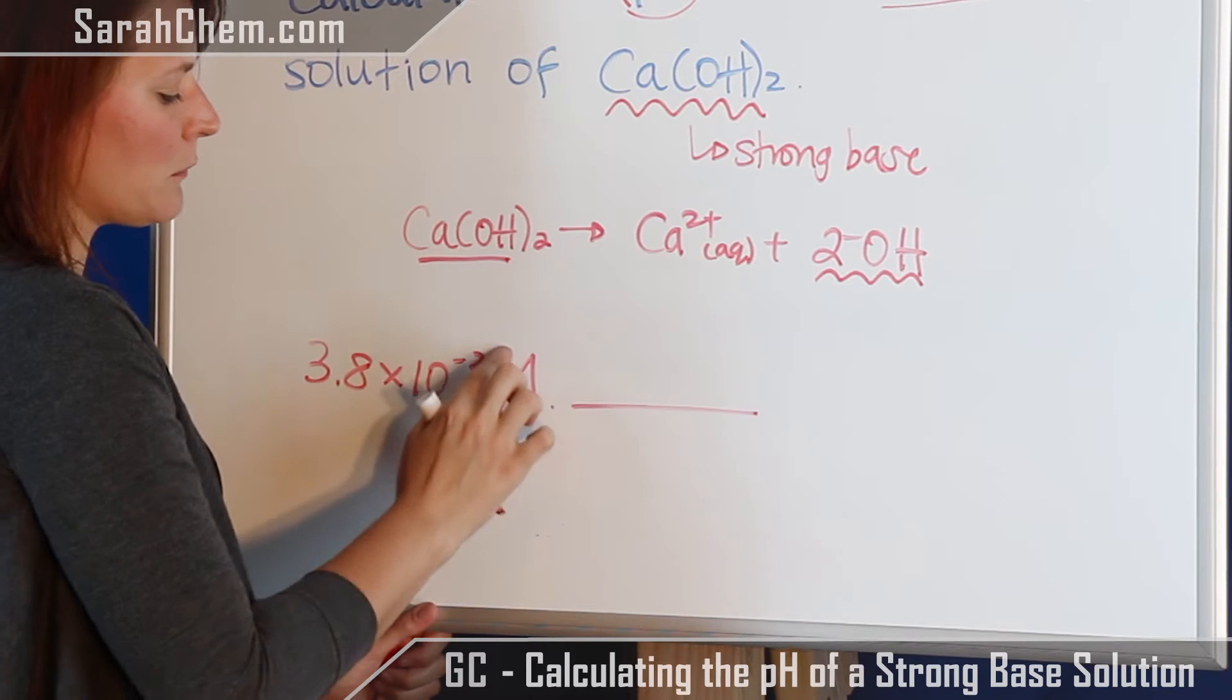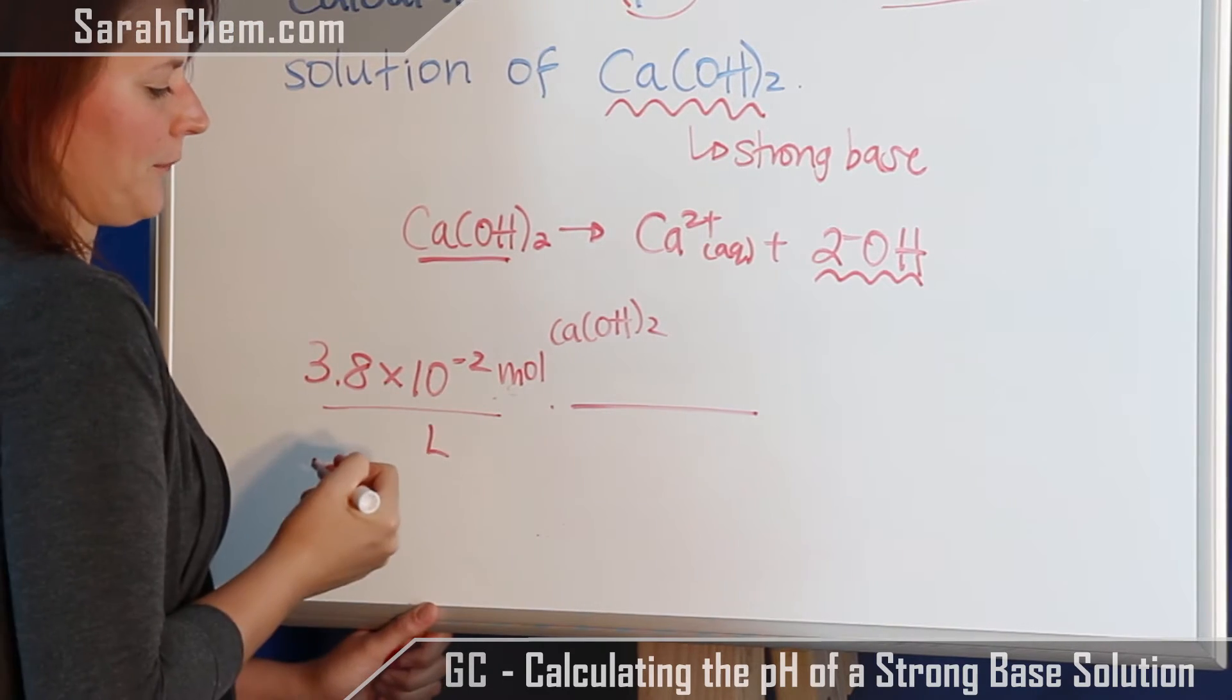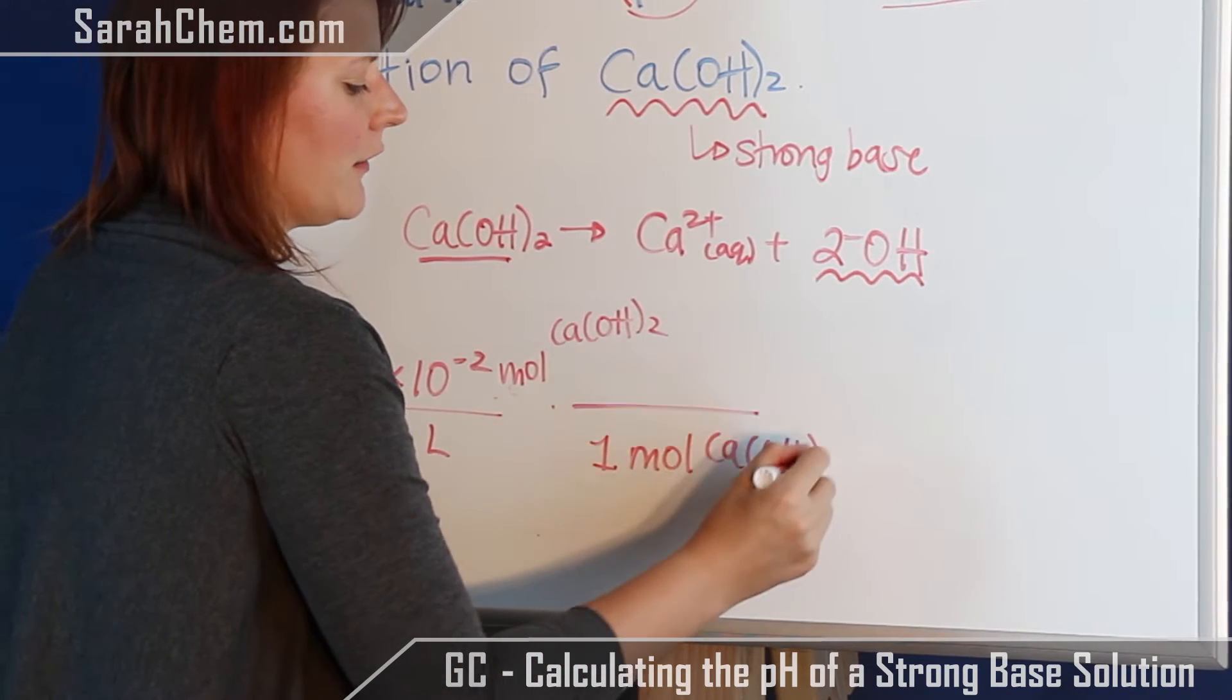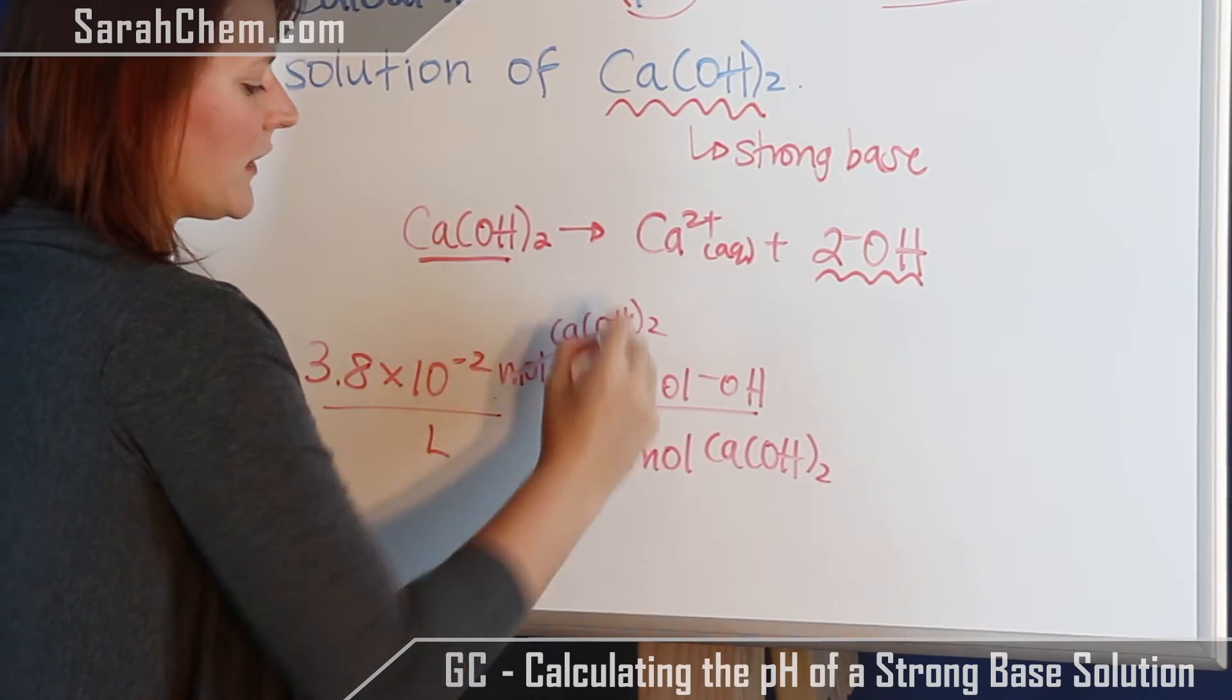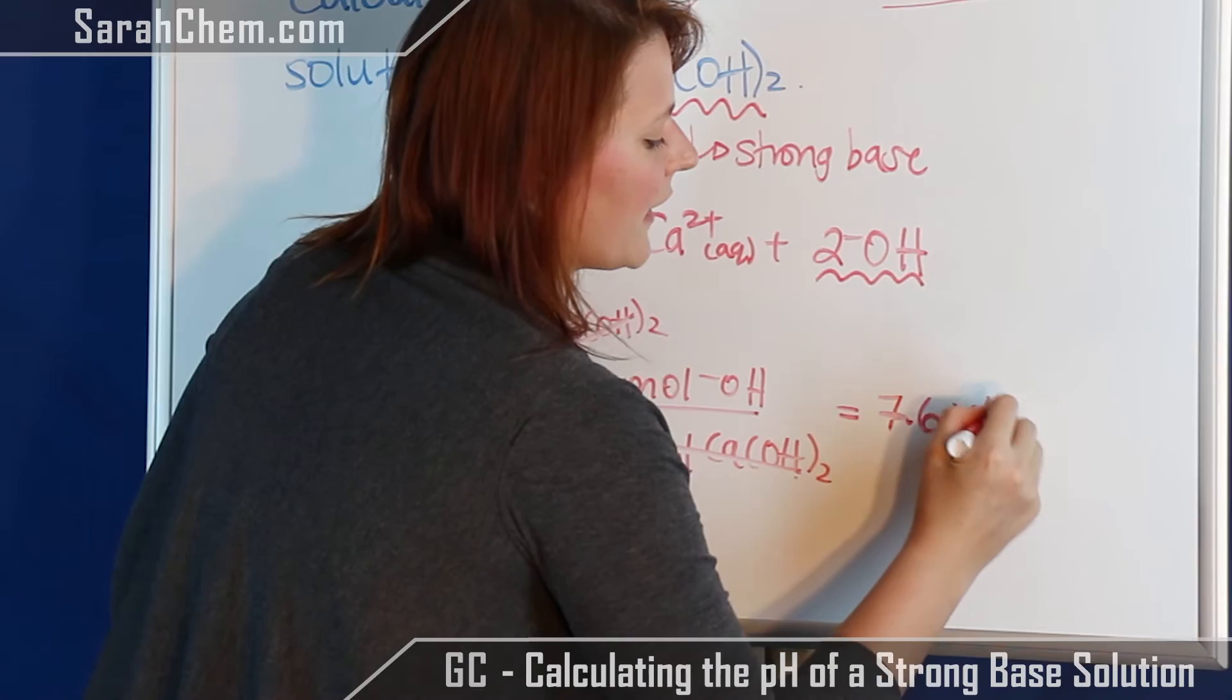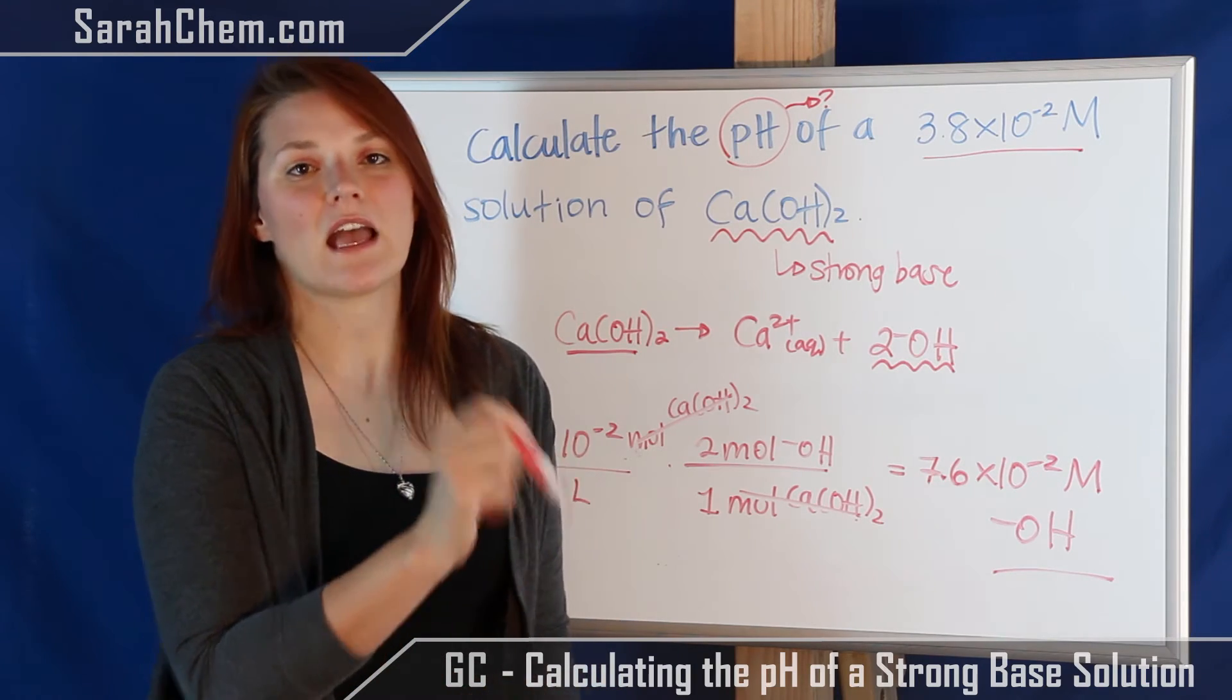So remember that this molar is going to be moles of our calcium hydroxide per liter. Now we want to get rid of moles of calcium hydroxide. We know that for every one mole of the calcium hydroxide, we have two moles of hydroxide. And we'll see that those cancel out with one another. So what we find out then is that in this solution we have 7.6 times 10 to the minus 2 molar hydroxide. And this is the value that we'll use to solve for our pOH and then for our pH.